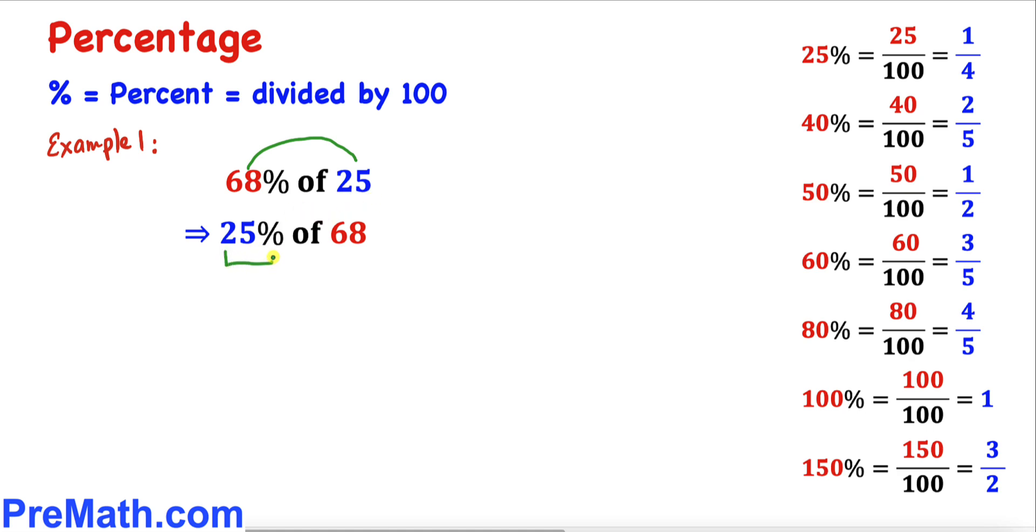Here's a really nice trick: we can switch these numbers around. 68 percent of 25 essentially means 25 percent of 68. Now we know 25 percent means 1 over 4, that means times multiplication and then this number 68.